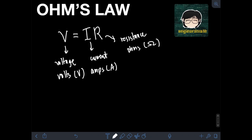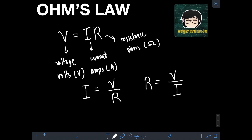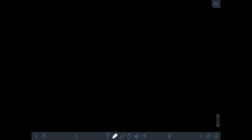Another form of this equation, when you solve it algebraically, is current is equal to V over R, and R is equal to V over I.